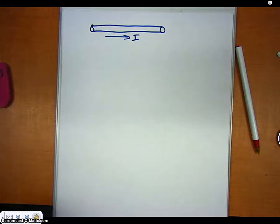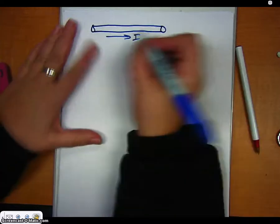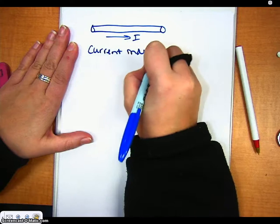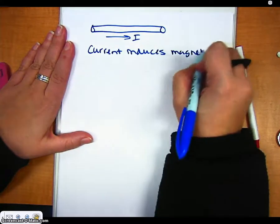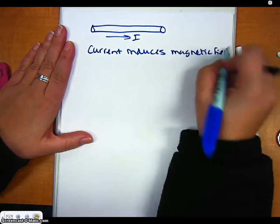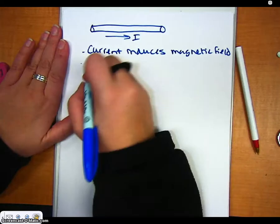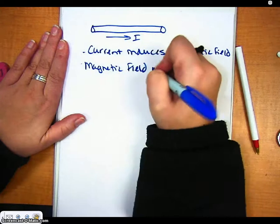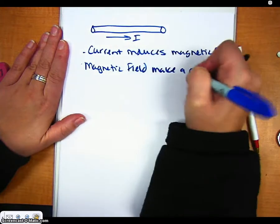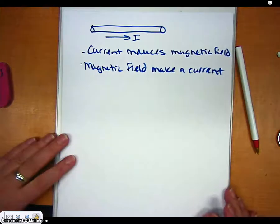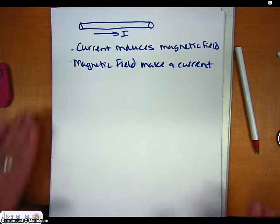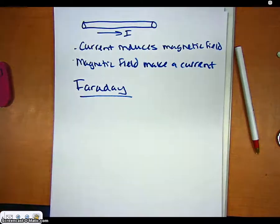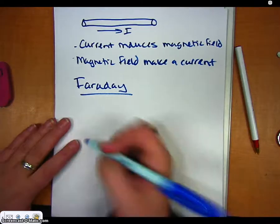So it makes sense that if a current induces a magnetic field, the question that we ask ourselves is: can a magnetic field make a current or cause a current? And this is what a guy named Faraday questioned, and he designed an experiment.